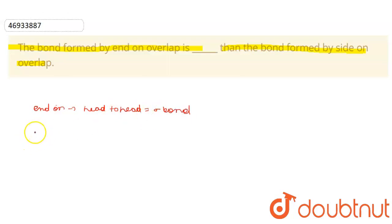The side overlap is talking about the pi bond. The side overlap is the pi bond and the end to end will be the sigma bond.